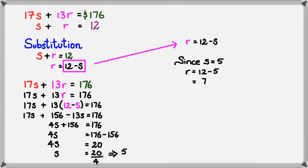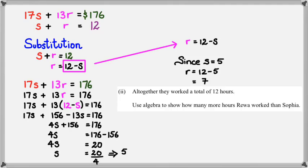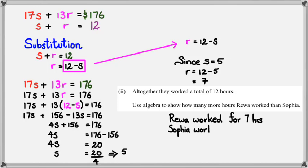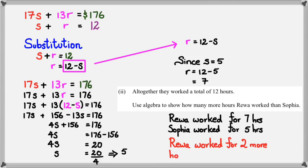Now we have S and R, but it's always a good idea to go back to the question to see what they actually asked. This is the second part: 'Use algebra to show how many more hours Riva worked than Sophia.' So if you stop here, you haven't actually completed this question — you've got to show how many more hours Riva worked. Just saying Riva worked 7 hours and Sophia worked 5 hours is not enough. You need a statement: Riva worked 2 more hours than Sophia. That's what's expected to get an excellence.